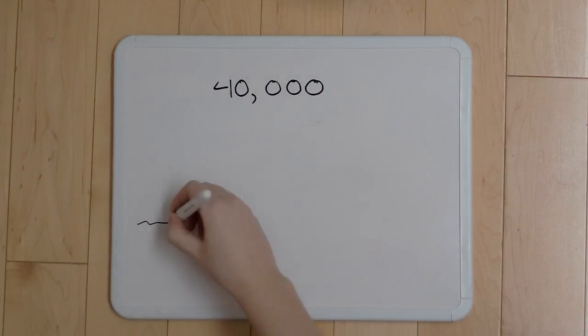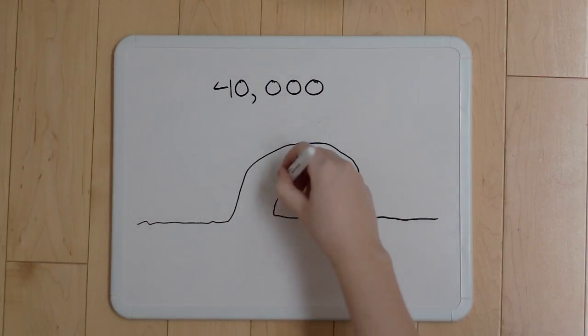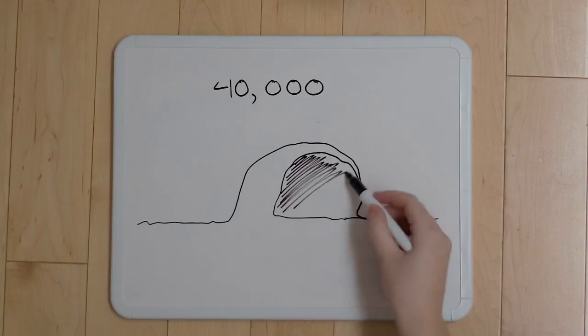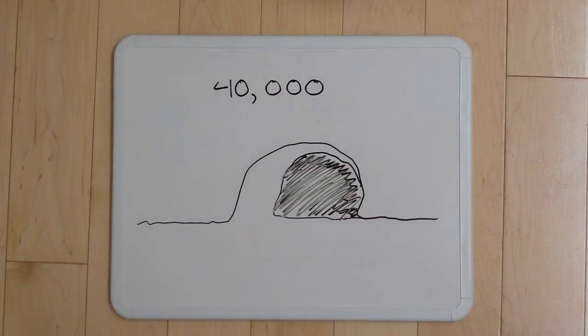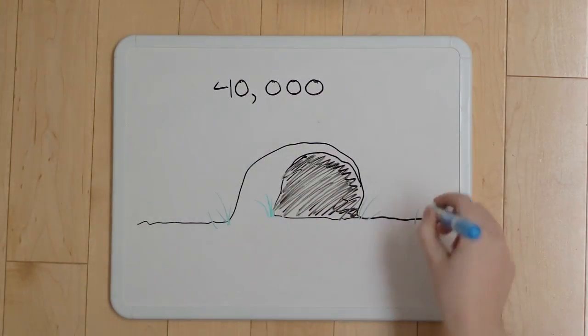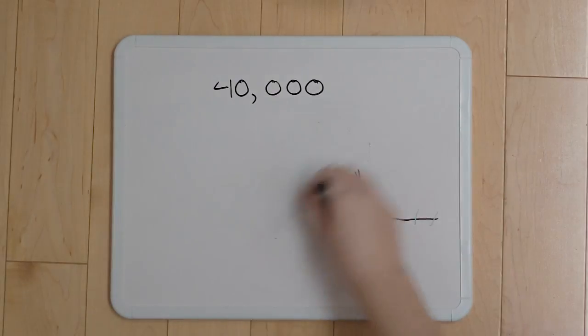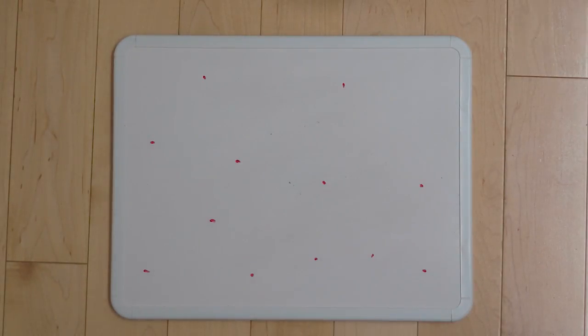The oldest cave paintings in the world are about 40,000 years old. There are images of dots in both Spain and France and stenciled hands in Indonesia. They were all painted thousands and hundreds of years apart, but they all have one thing in common. They are all red.